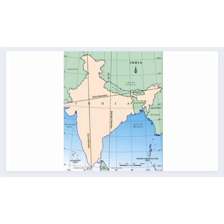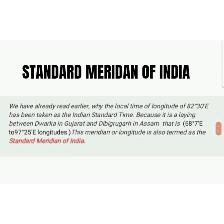That is, from east Arunachal Pradesh to west Gujarat. The difference between these two points would be about two hours, as the local time changes by four minutes for every one degree of longitude. The sun rises about two hours earlier in the east (Arunachal Pradesh) than in the west (Gujarat). The longitude of 82°30'E has been taken as the Indian Standard Time because it lies between Dwarka in Gujarat and Dibrugarh in Assam. This meridian is also termed as the Standard Meridian of India.